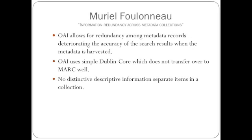Muriel describes the redundancy in harvesting metadata and information redundancy across metadata collections. She describes experiments emphasizing the information redundancy that occurs using OAI. The first experiment takes a group of 176 metadata collections and describes similarities in the information within the metadata records. Another experiment is provided as an example which focuses on the tendency for certain items from the same collection to appear together because they do not have enough differing and searchable information.